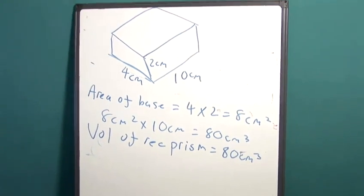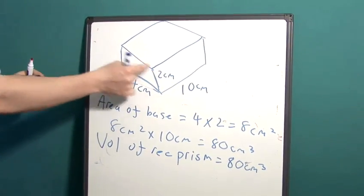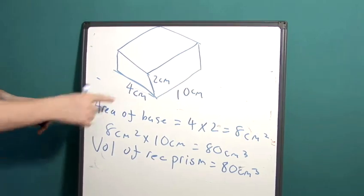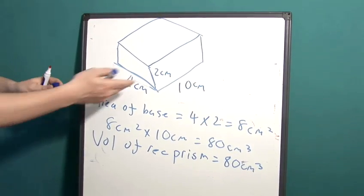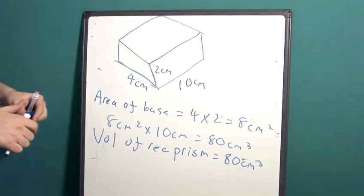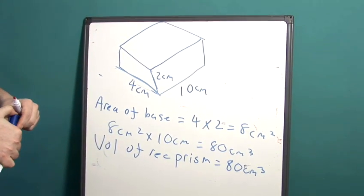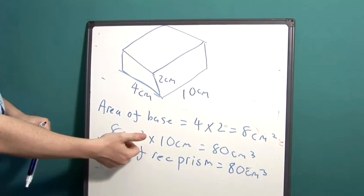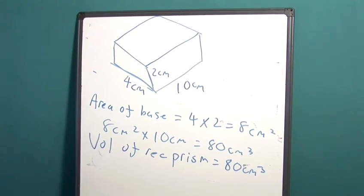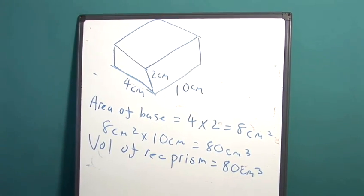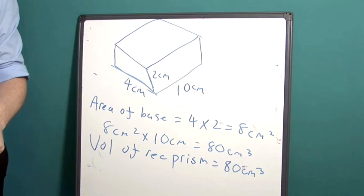Just to recap once more, the first step is to work out the area of the base shape, which was 4 times 2, with centimetre squared as our units, and then multiply it by the length of the prism, which was 10cm. This gave us 8 multiplied by 10 with units of centimetre cubed, 80cm cubed. And that is how to work out the volume of a rectangular prism.